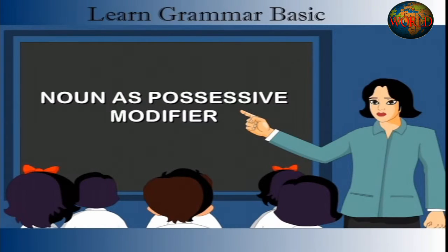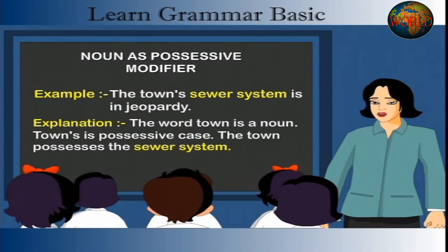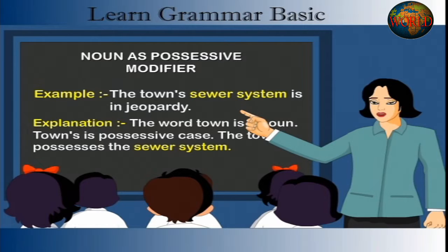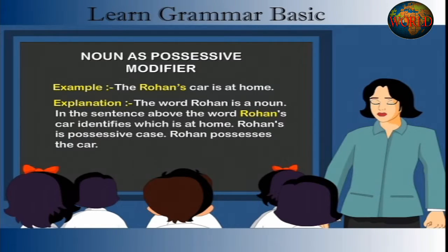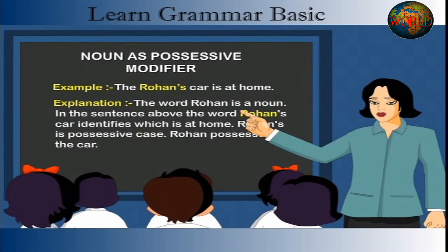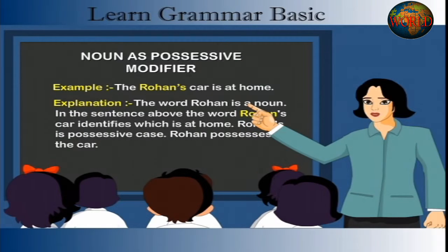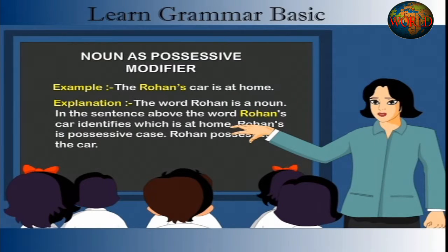Noun as Possessive Modifier. Example: The town's sewer system is in jeopardy. Explanation: The word 'town' is a noun. 'Town's' is the possessive case — the town possesses the sewer system. Example: Rohan's car is at home. Explanation: The word 'Rohan' is a noun. 'Rohan's' is the possessive case — Rohan possesses the car.